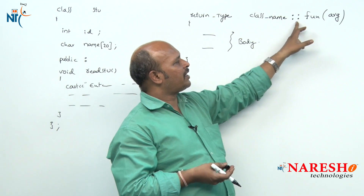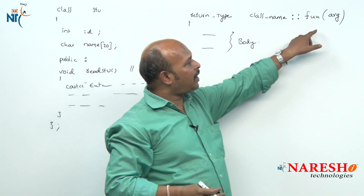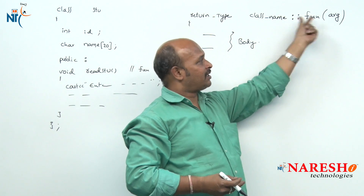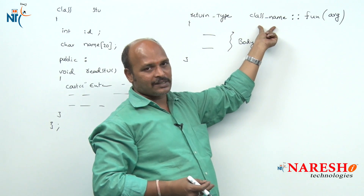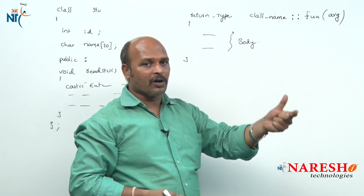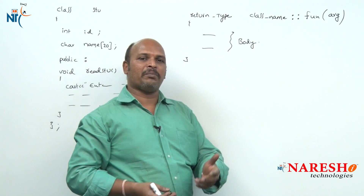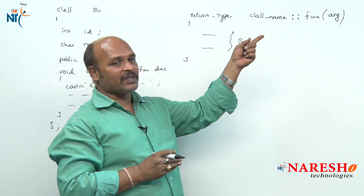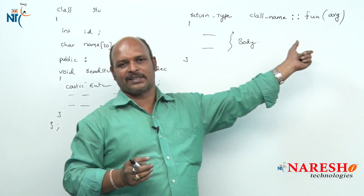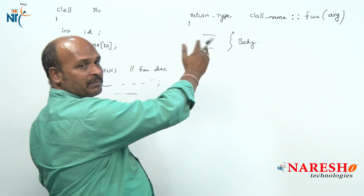The '::' scope resolution operator indicates that the function on its right side belongs to the class on its left. Generally, scope means 'to whom it belongs.' So this syntax tells the compiler that this function belongs to this class, and the compiler will directly search for it within that class. This is how to define a member function outside the class.